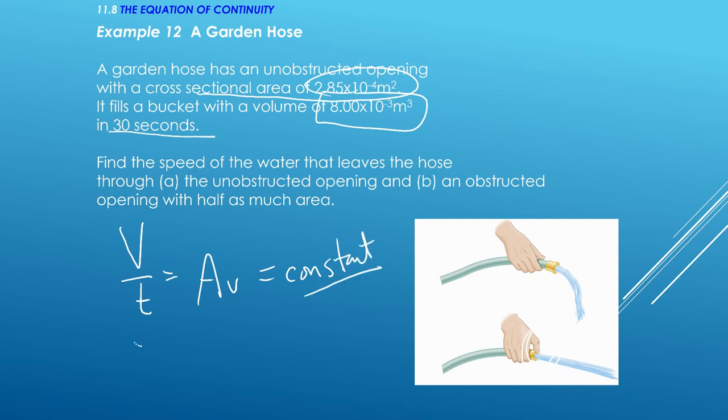So the key idea here is the volume flow rate should equal the area times the speed. And this is going to stay constant no matter what's true about the area. So I have the volume, this 8 times 10 to the minus 3 cubic meters, divide that by the time of 30 seconds. And that should equal the area of the hose, 2.85 times 10 to the minus 4, multiplied by speed. And then we should be able to solve for that speed. So it's kind of a neat idea. This is our equation of continuity that we're going to use. And it should help us out with a lot of our problems.